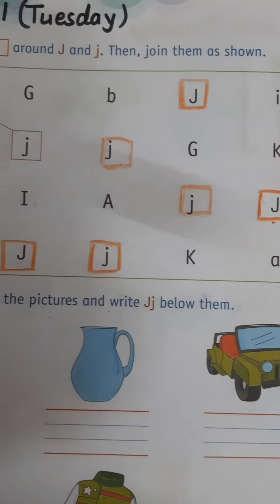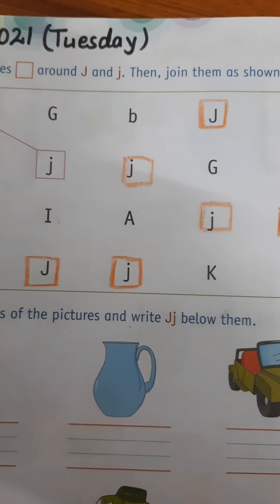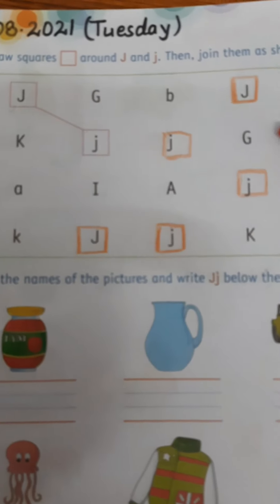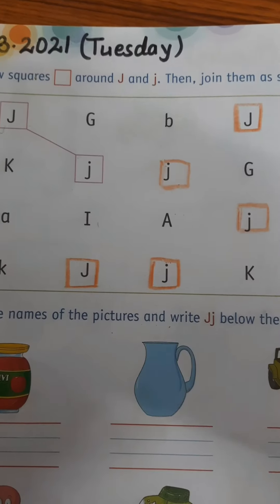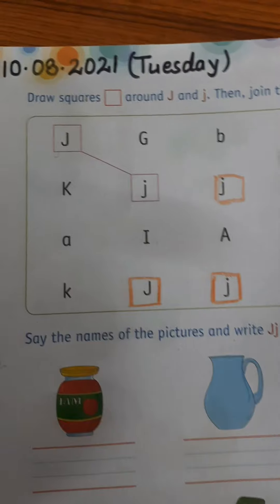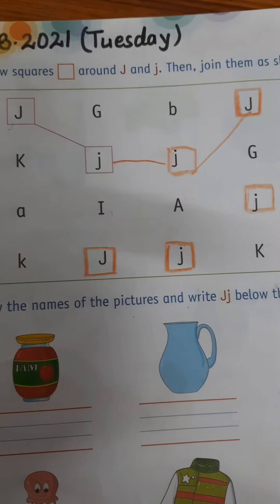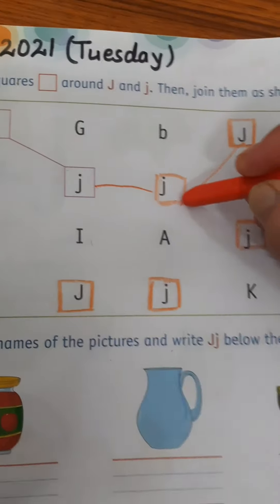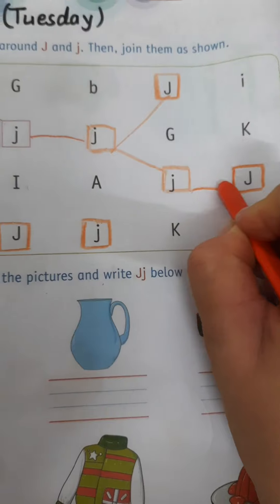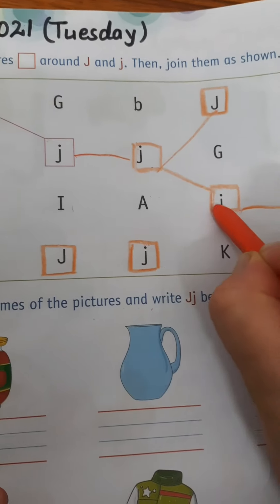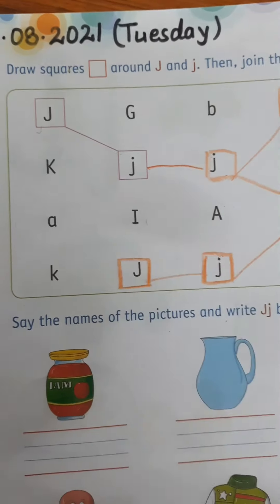Ma'am has drawn all the squares. Now we will join them. All the squares we will join — as you can see, the first one is done for us. So this j we will join with this j, then capital J, then j with j, then this j — small j with capital J, then small j with small j, and then small j with capital J. Join like this, children.